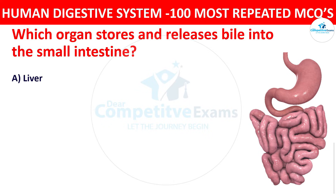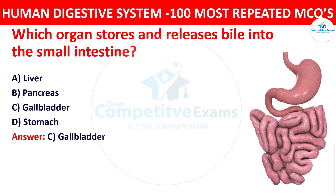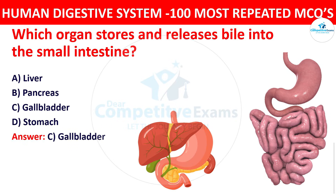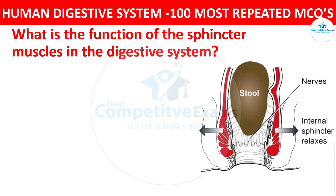Question number twelve: Which organ stores and releases bile into the small intestine? Your options are liver, pancreas, gallbladder, or stomach. The right answer is gallbladder. The gallbladder stores and releases bile, which aids in the digestion of fats in the small intestine.